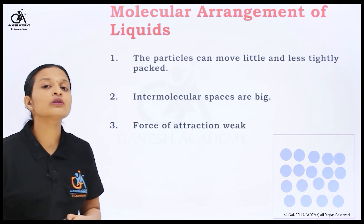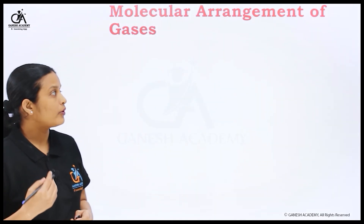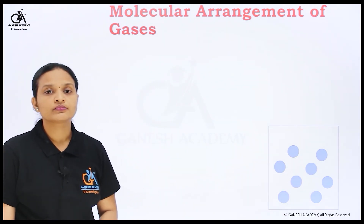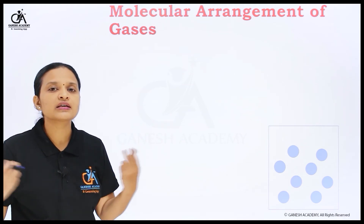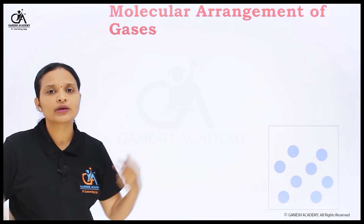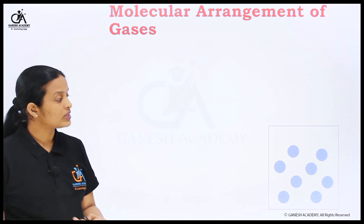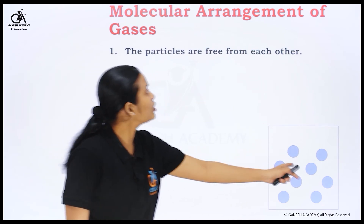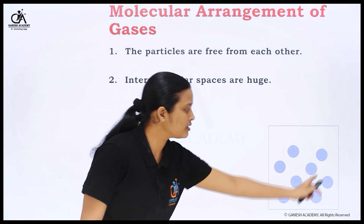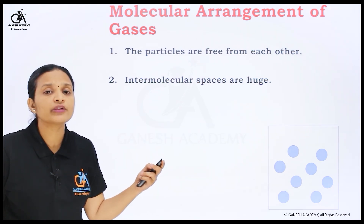Now I am telling you about molecular arrangement of gaseous particles or gases. In gaseous particles, you can see here those particles are far away from each other. The distance between particles is so large; the particles are away from each other in different directions. There is so much gap in between the particles, so we can say the intermolecular space is huge between the particles — very much intermolecular space is present.